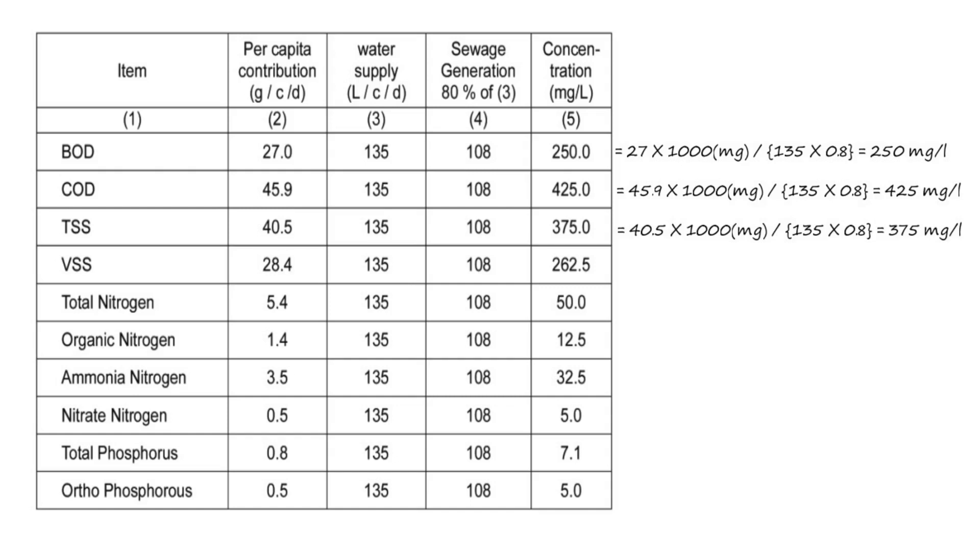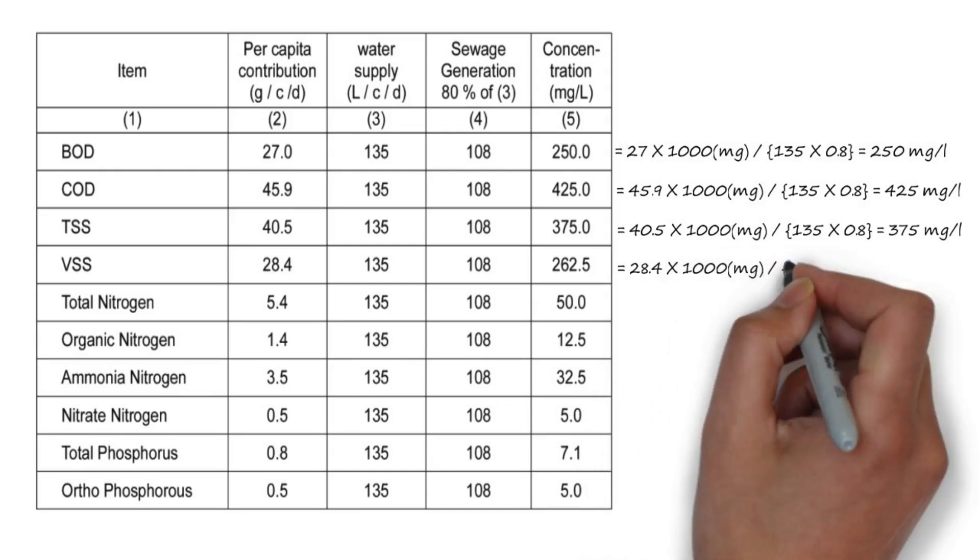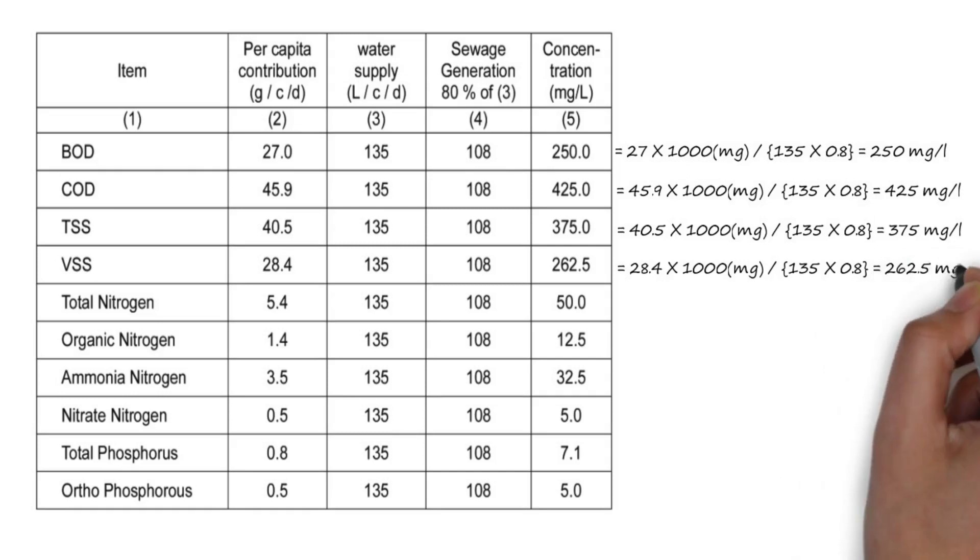For volatile suspended solid, 28.4 multiplied by 1000 divided by 135 multiplied by 0.8, that is 262.5 mg per litre.